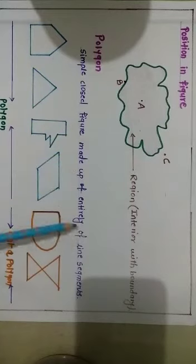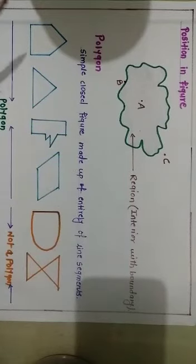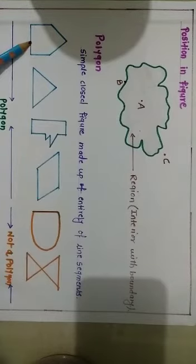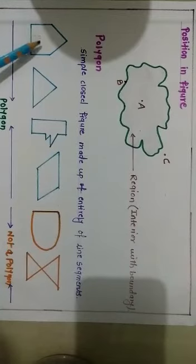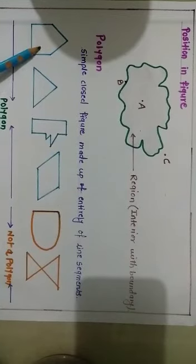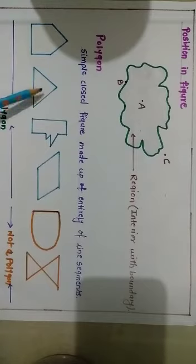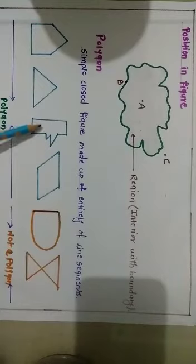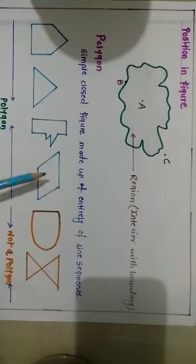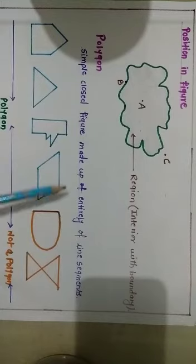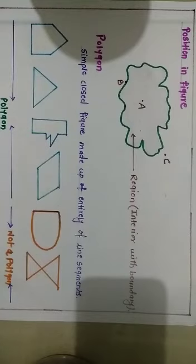Now let us understand what is a polygon. A polygon means a simple closed figure made up entirely of line segments. Here you can see some figures of a polygon. The first figure is simple and closed, made up of five line segments, which we call a pentagon. The second figure is also simple and closed, made up of three line segments, which we call a triangle. The other figures are also simple, closed, and made up of line segments. So all four figures are polygons.